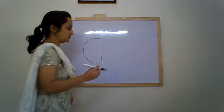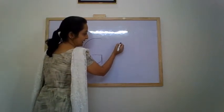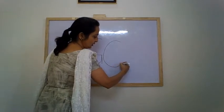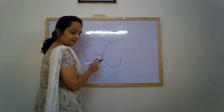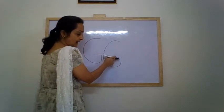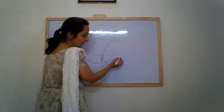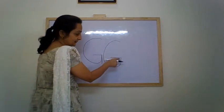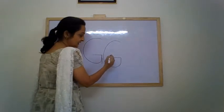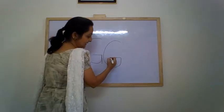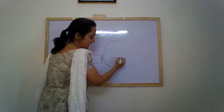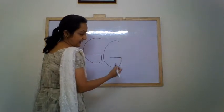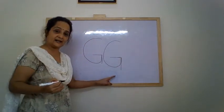Let me show it to you once again. Make a C — a backward curve. Go up. Make a sleeping line inside. Sleeping line, up. And a standing line.